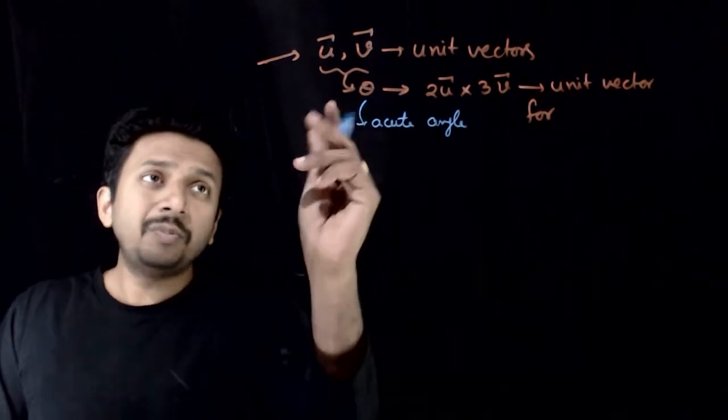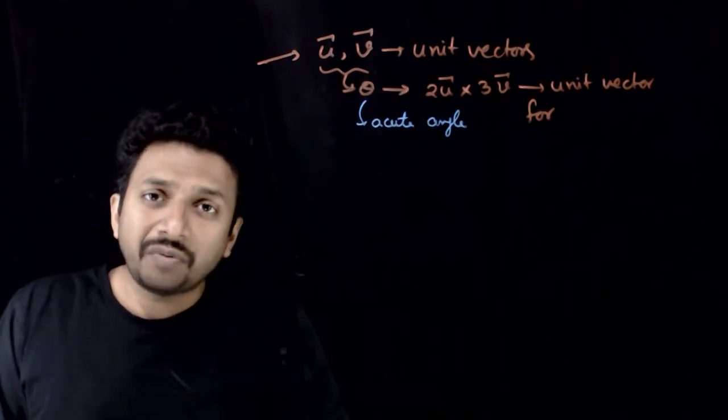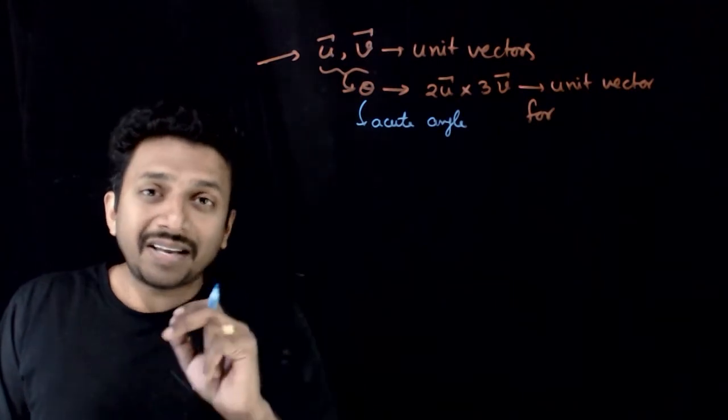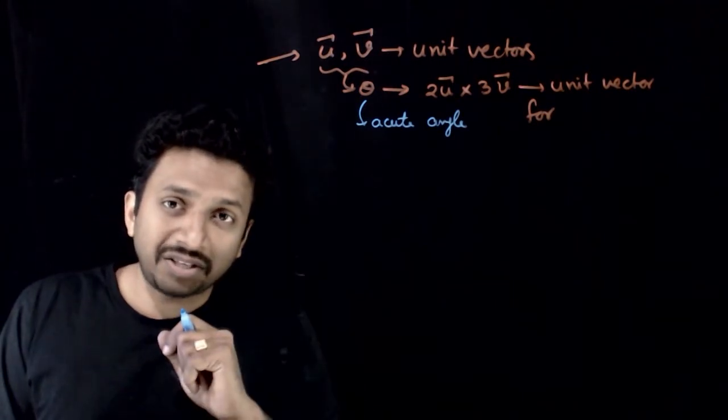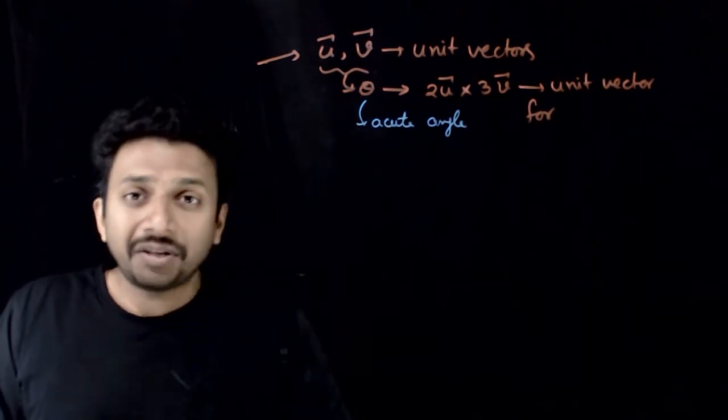So, welcome students. In this question, u bar and v bar are given as unit vectors and they are inclined at an angle of theta with each other, and it is given that theta is an acute angle.